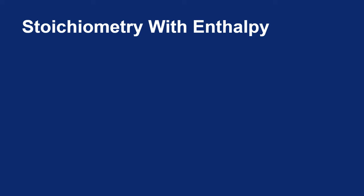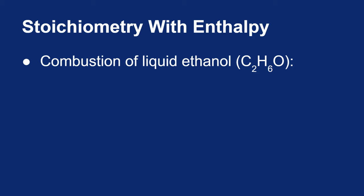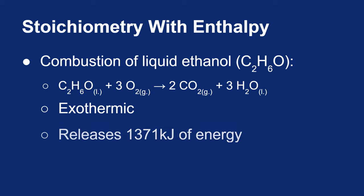Let's bring this together with the stoichiometry we did last trimester. We'll start with the combustion of liquid ethanol, C2H6O. In this combustion reaction, we combine ethanol with oxygen to make carbon dioxide and water. When balanced: one mole of ethanol combines with three moles of oxygen to make two moles of carbon dioxide and three moles of water. Like methane, this is exothermic, releasing 1371 kilojoules of energy.